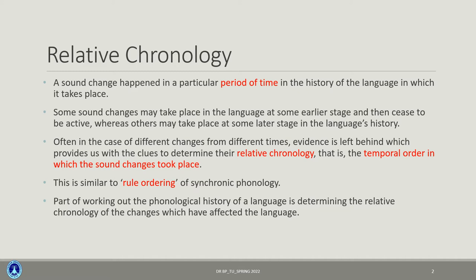There may be relative chronology depending on the period of time when those sound changes occurred in a particular language's history. Evidence left behind from different changes at different times provides clues to determine their relative chronology — when a sound was produced and how changes are related to each other. This is also known as the temporal order in which the sound changes took place.